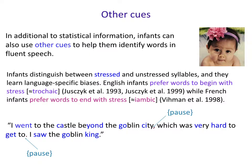They actually learn biases that are specific to the languages that they are picking up. For example, English infants prefer words that begin with a stressed syllable, which is sometimes called a trochaic pattern. They prefer words like 'castle', while French infants prefer words to end with stress — words that have a 'beyond' kind of pattern. The stressed syllable is at the end; it's called an iambic pattern, for poetic reasons that don't concern us.